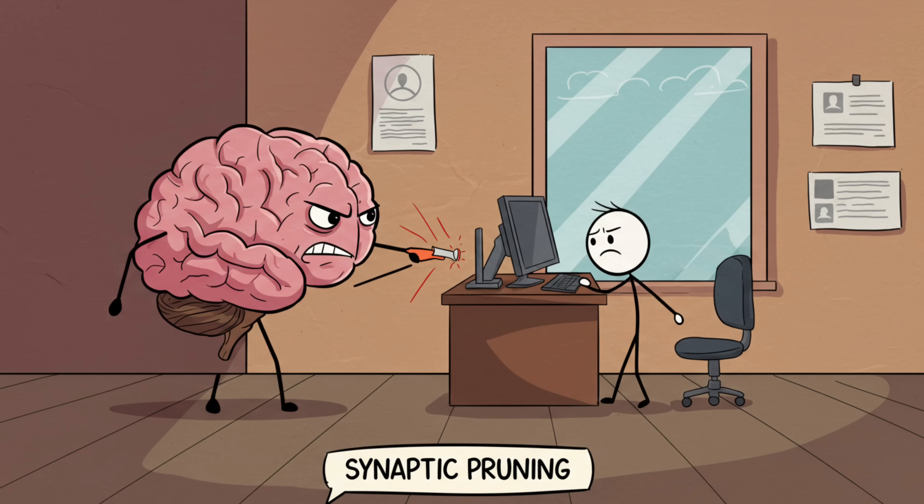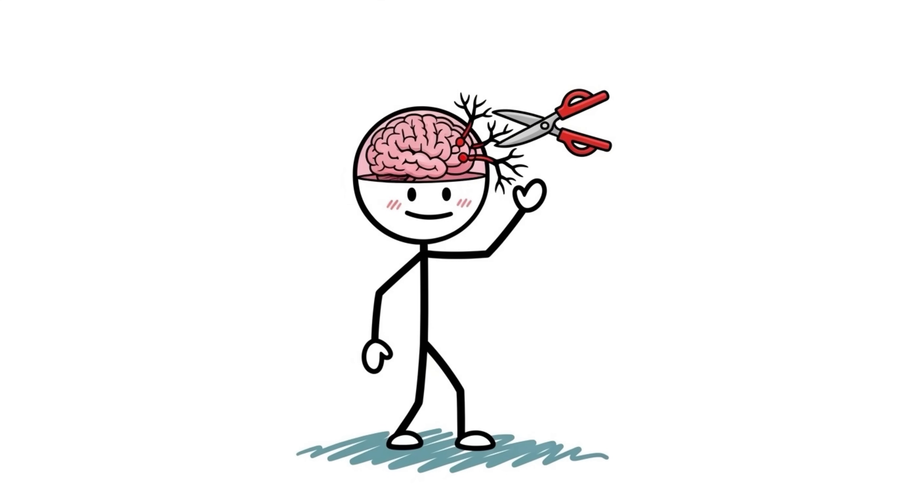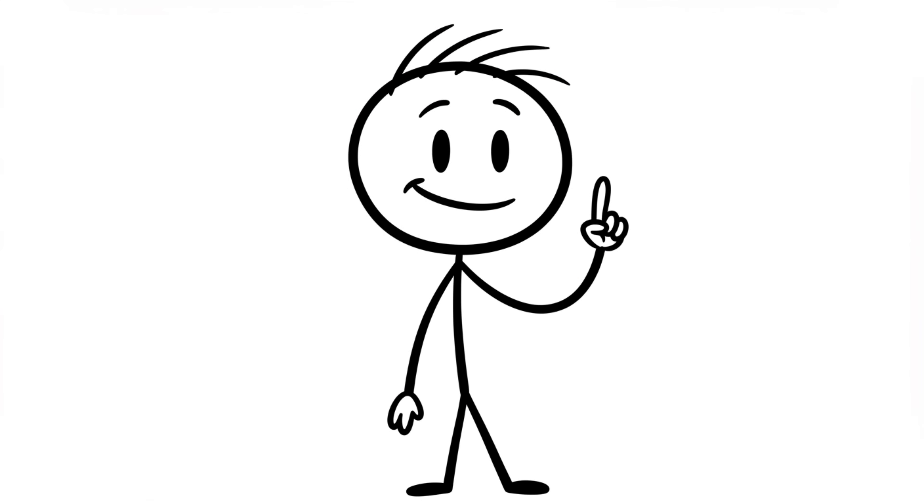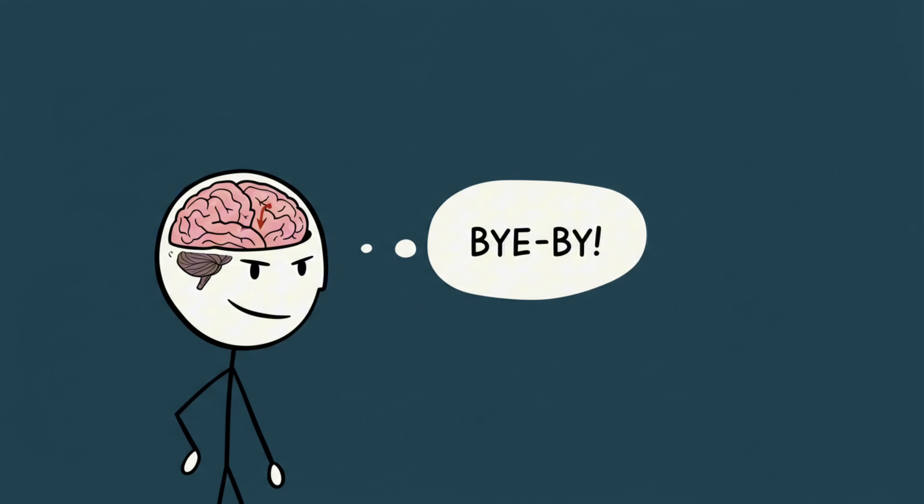Scientists call this synaptic pruning, which sounds fancy but is basically your brain firing the interns. Neurons that don't get used enough get trimmed away, like dead branches. This makes your thinking more efficient, but it also means bye-bye to a lot of those early, unimportant-seeming experiences.